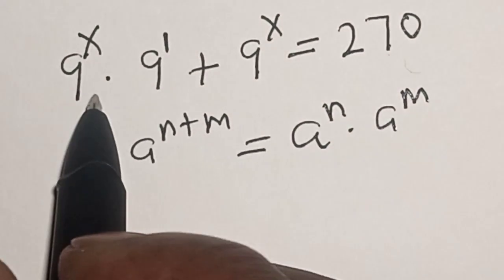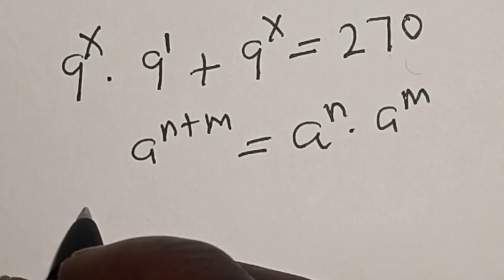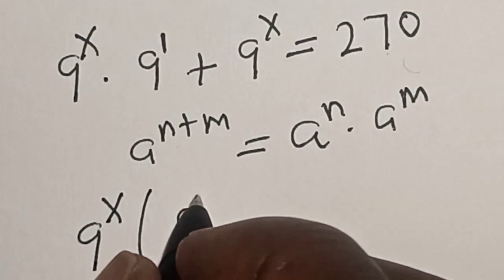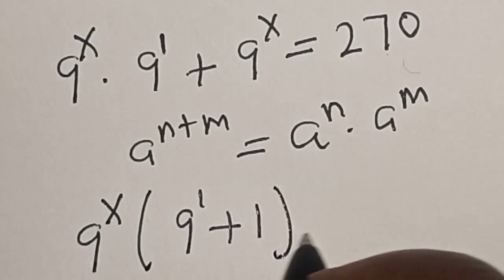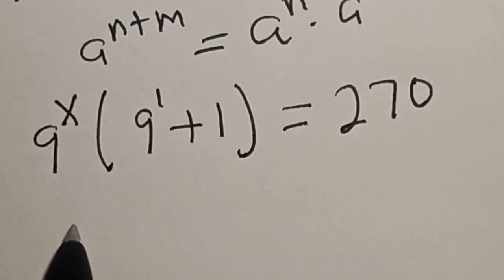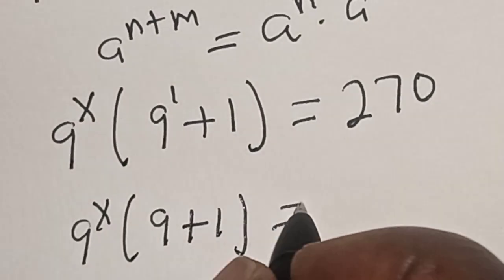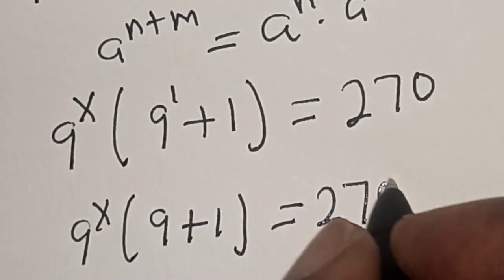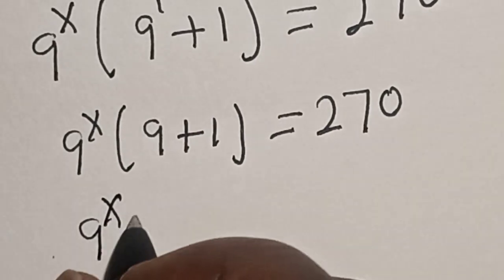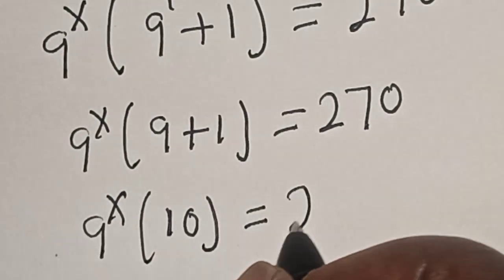Now, 9 raised to power s is common in both terms. Let's factor it out. We have 9 raised to power s, multiplied by the quantity 9 raised to power 1 plus 1, is equal to 270. So we have 9 raised to power s, multiplied by 9 plus 1, which equals 10, is equal to 270.